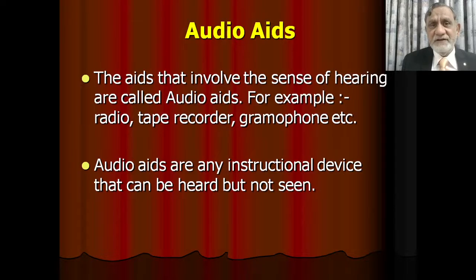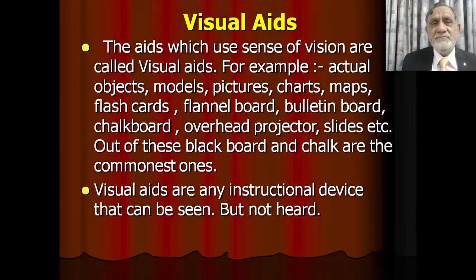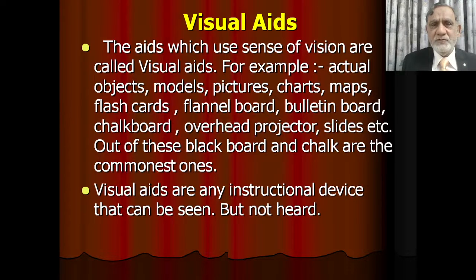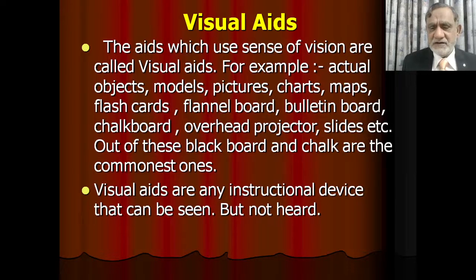Audio aids are instructional devices that can be heard but not seen. The second type of AV aids are Visual Aids. The aids which use the sense of vision are called visual aids. For example, actual objects, models, pictures, charts, maps, flashcards, flannel board, bulletin board, chalkboard, overhead projector, slides, etc. Out of these, blackboard and chalk are the commonest ones. Visual aids are any instructional device that can be seen but cannot be heard.